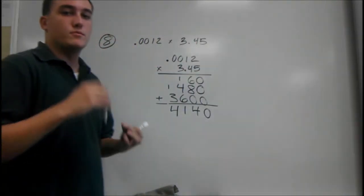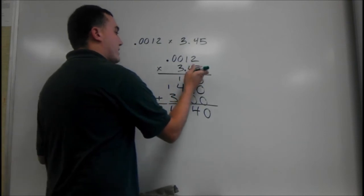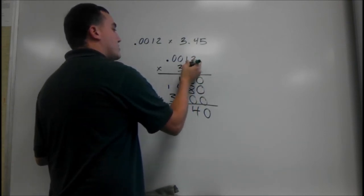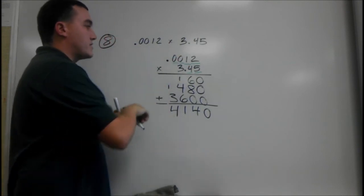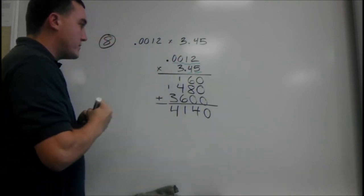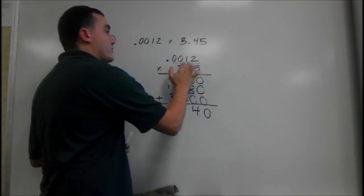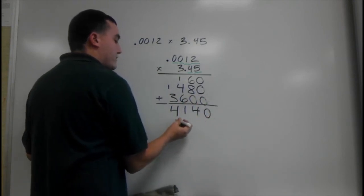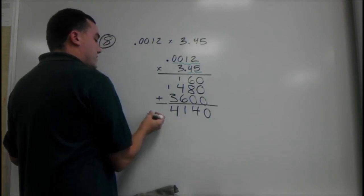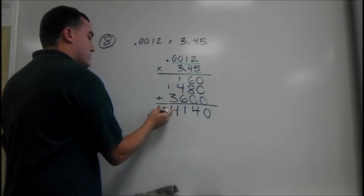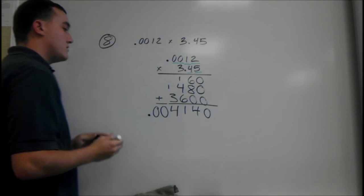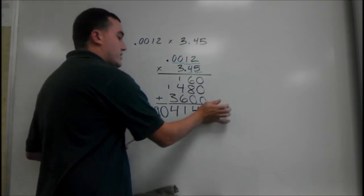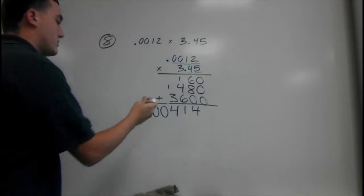Now we count up the decimal places. We have 2 in this number and 1, 2, 3, 4 up here. Just because they're 0s, we still count them. So we have 6 total. From here, we move over 6 places: 1, 2, 3, 4, 5, 6. The decimal goes here. So our answer is 0.004140. Don't need that last 0. So here's our answer.